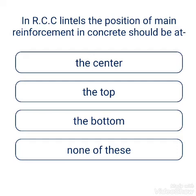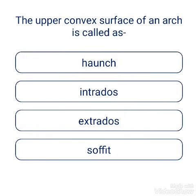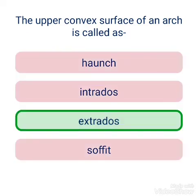In RCC lintels, the main reinforcement is placed at the bottom. The upper convex surface of an arch is called extradose. The inner surface of an arch is called intradose.